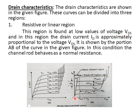The resistive, linear, or ohmic region is found at low values of voltage VDS. In this region, the drain current ID is approximately proportional to the voltage VDS, as shown by portion AB of the curve. In this condition, the channel rod behaves as a normal resistance.